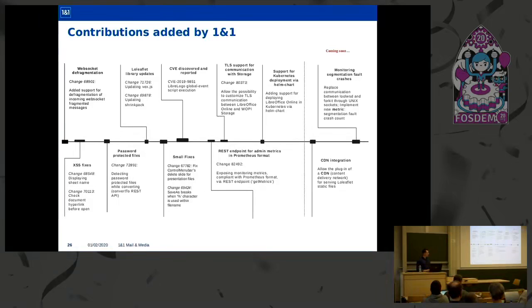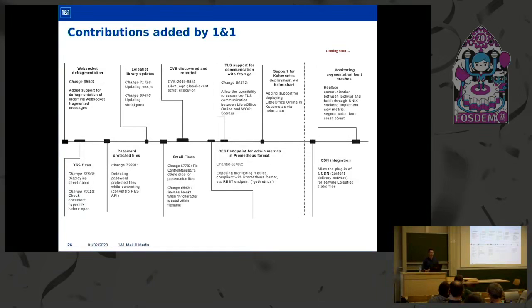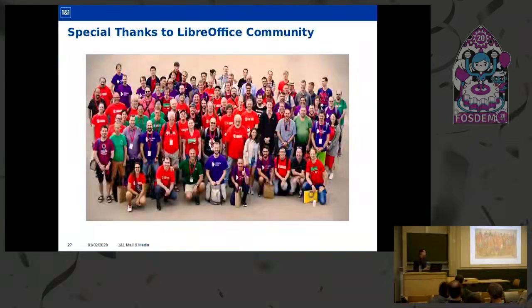For short-term future goals, we want to open-source a segmentation fault monitoring enhancement with a new metric for segmentation fault crashes, which will allow us to monitor crashes inside LibreOffice Online. This will also require a change in communication between the LOOL client and the forkit process through Unix sockets. We also want to open-source CDN integration to allow plugging in a content delivery network for serving LOOL client static files. Online Office Editor would not have been made possible without the full contribution from the open source community — a big thanks to the LibreOffice community and all your patches.